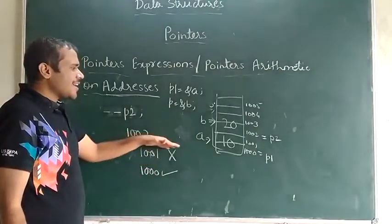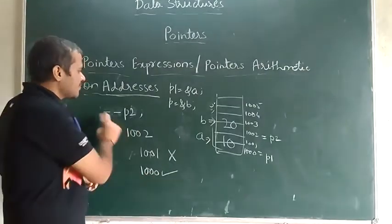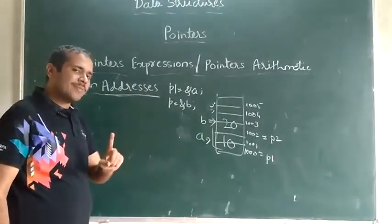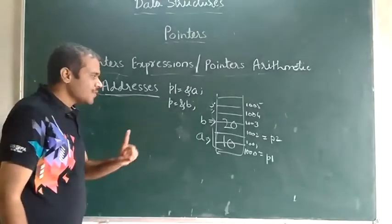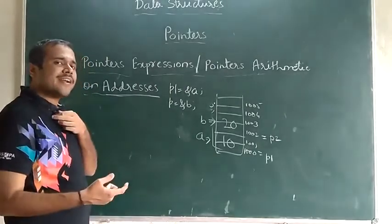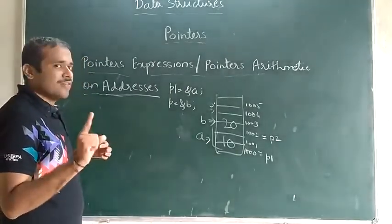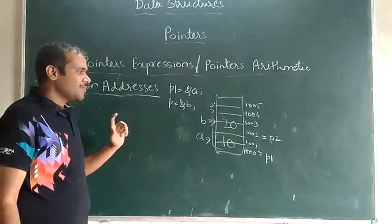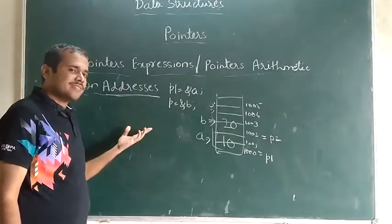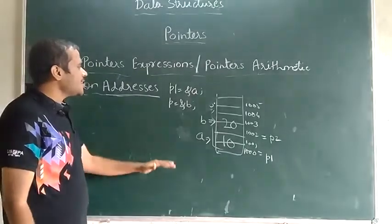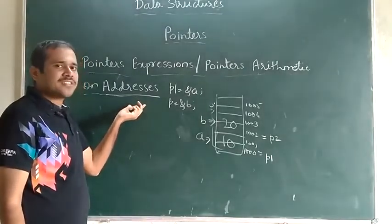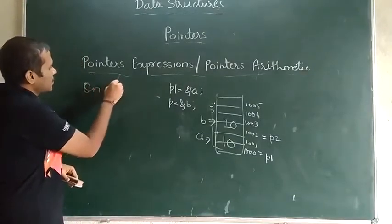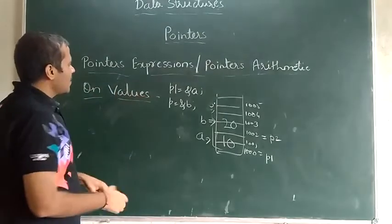We have seen integer values. What about characters? The same operations can be done, but the difference is that character takes 1 byte of memory, so increment or decrement changes by only 1 byte. Float takes 4 bytes of memory as per standard. In some compilers, integer takes 4 bytes and float takes 8 bytes.